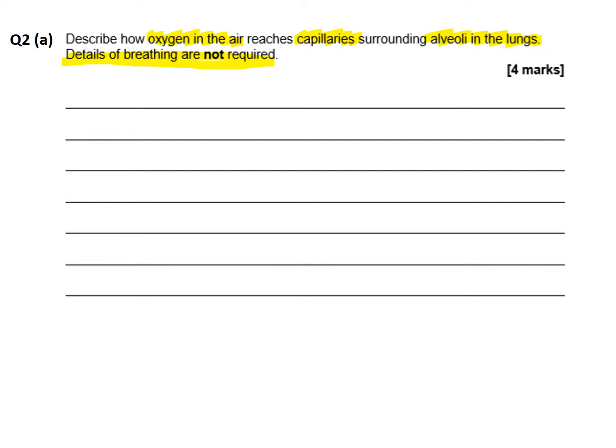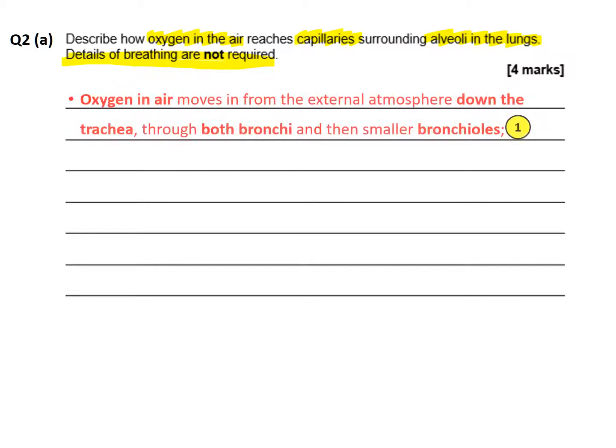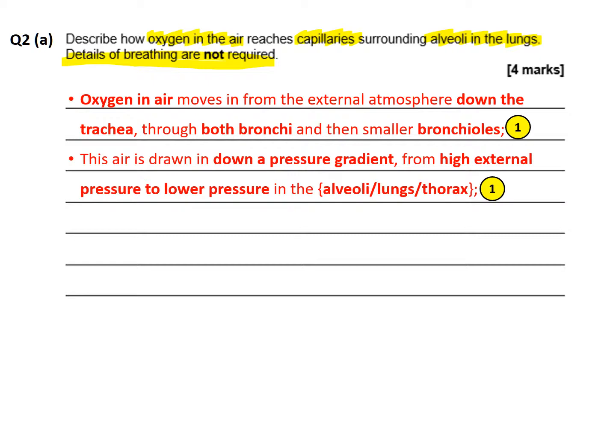Looking at the mark scheme, oxygen gas in the air moves from the external atmosphere down the trachea. It then moves through both bronchi — the left bronchus and the right bronchus — and we know each bronchus splits into smaller bronchioles that eventually feed the alveoli with fresh oxygen.